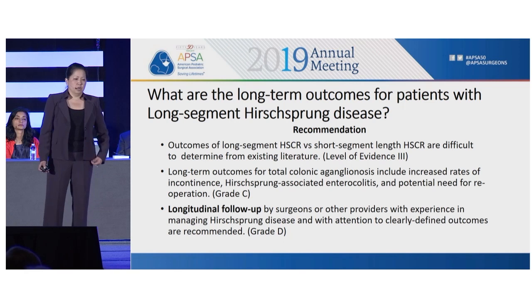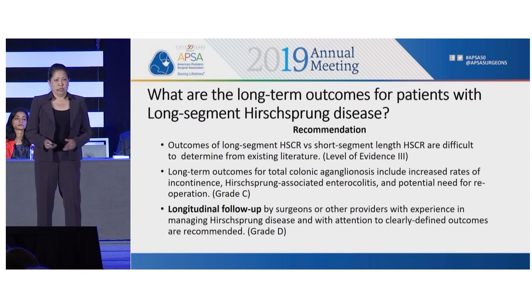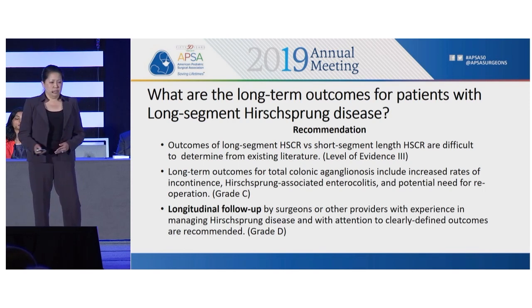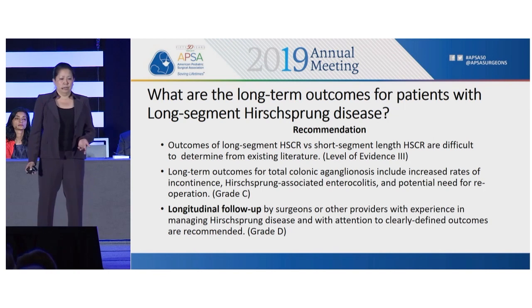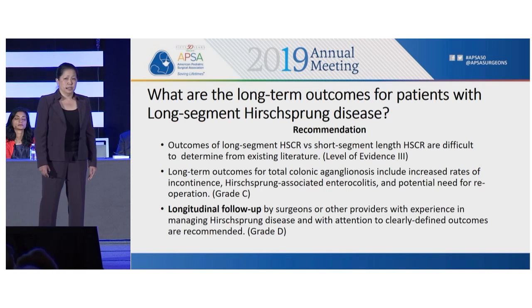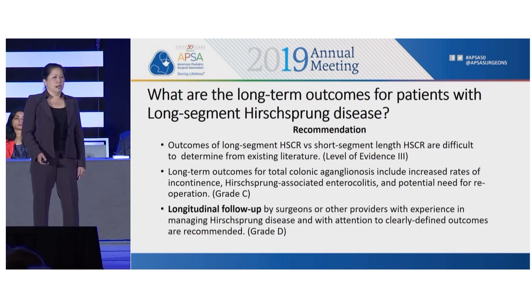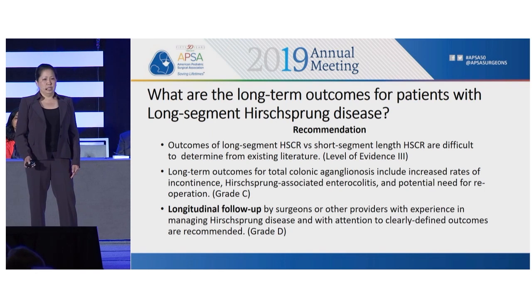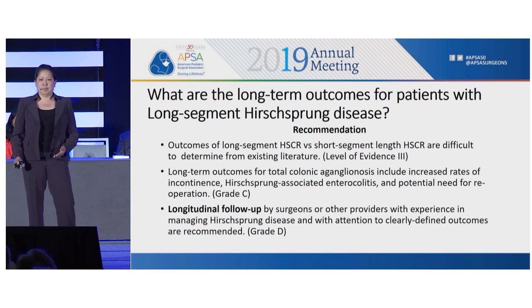In terms of long-term outcomes, it's difficult to determine from the literature because there's often not a separation between short and long-segment reported. For total colonic aganglionosis, there are increased rates of incontinence, Hirschsprung's-associated enterocolitis, and a potential need for reoperations. Longitudinal follow-up for these patients is really needed, because once patients have had their definitive surgery, they're not necessarily all well. Many still have problems that need to be managed by someone familiar with Hirschsprung's disease.